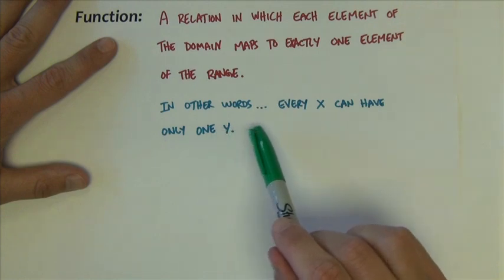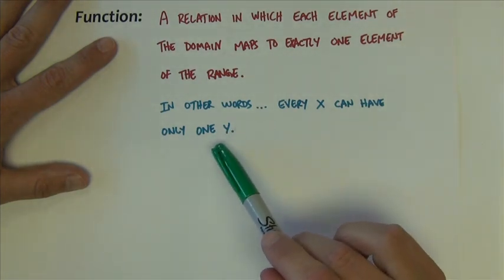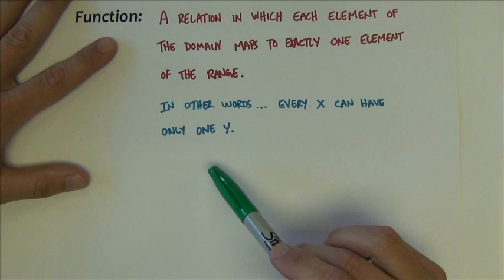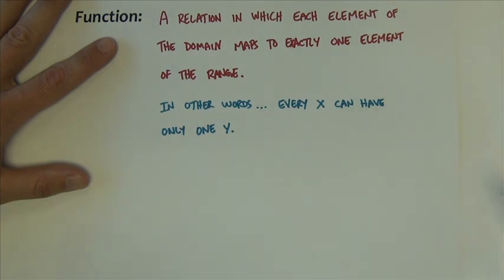In other words, every x can have only one y. Each x gets one y, simple enough.